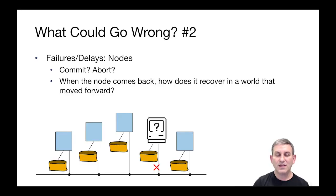Here's another problem that can go wrong. Consider the case where we have failures or delays of nodes. The network is running a distributed database and then at some point we stop hearing from one of the nodes. So the transactions that are running now, should they commit? Should they abort?